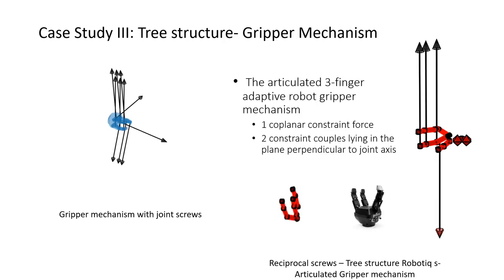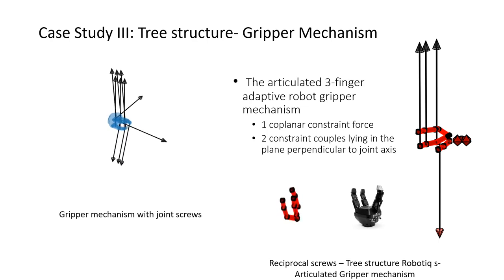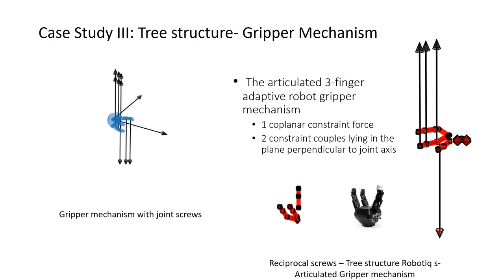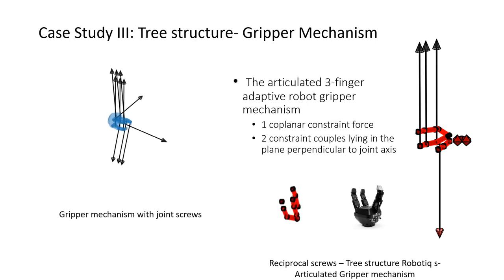A tree-structured robot is composed of N mobile links and N joints. It has a fixed base and multiple terminal links, and a tree structure has as many main branches as the number of terminal links. In the 3-finger adaptive robo-gripper mechanism from Robotic, the joint screws are shown for multiple fingers. For the sake of clarity, one finger with 3R joints is considered. The twists are shown and the reciprocal screws were computed using the linear algebraic approach, which results in one constrained force and two constrained couples.